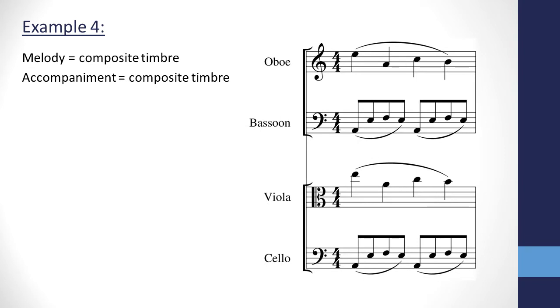Here we have the viola and oboe doubling in unison on the melody, while the bassoon and cello double in unison on the accompaniment. The sound is fuller since both melody and accompaniment are doubled, but now there is a lack of pure timbre.